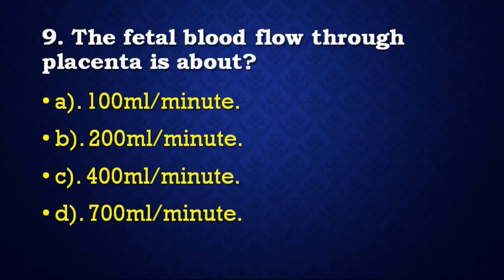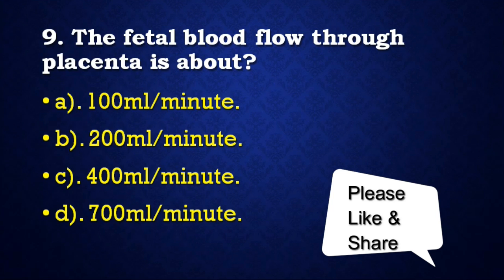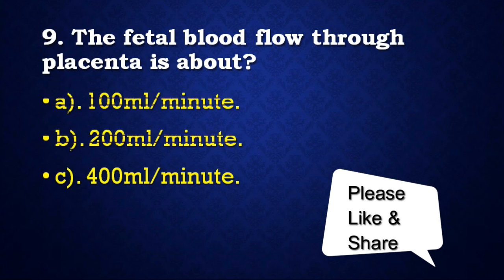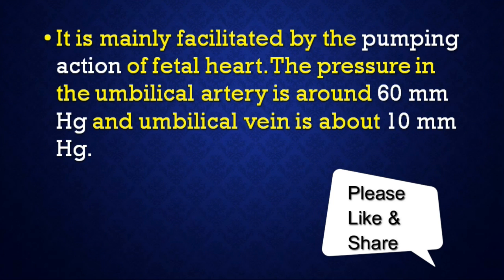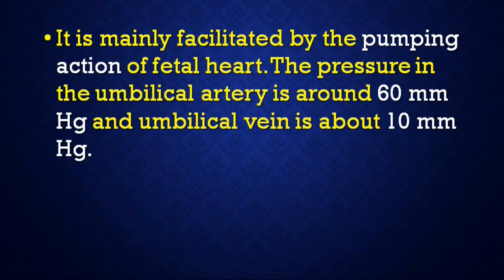Next question: The fetal blood flow through the placenta is about — 100 ml per minute, 200 ml per minute, or 400 ml per minute? Correct answer is 400 ml per minute. It is mainly facilitated by the pumping action of the fetal heart. The pressure in the umbilical artery is around 60 mmHg and the umbilical vein is about 10 mmHg.